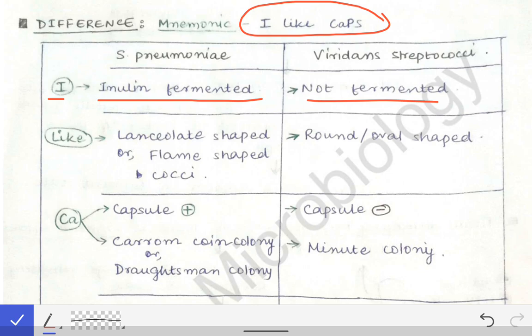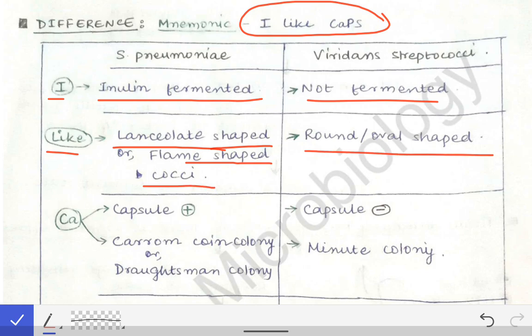Next comes 'L' in LIKE, which stands for lanceolate-shaped cocci. Streptococcus pneumoniae is lanceolate-shaped — also called flame-shaped cocci in some books — while Viridans streptococci are round or oval-shaped cocci.